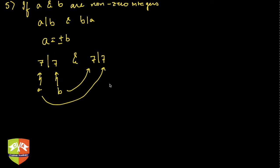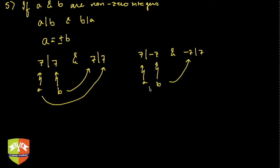Another case is when seven divides minus seven and minus seven divides seven. In this case, this was my a and this was b, and here b and a swap. If you see, this holds true only when a is equal to plus or minus b — there is no other possibility.